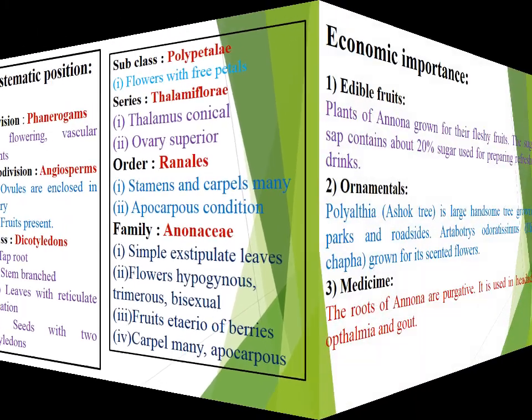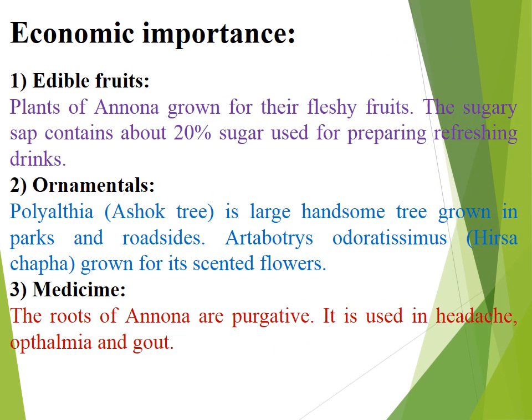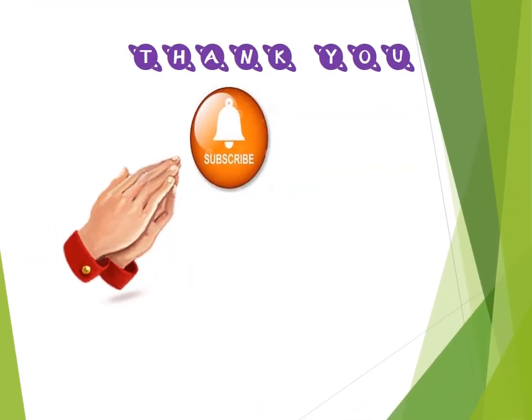Economic importance of family Annonaceae: Edible fruits — plants of Annona are grown for their fleshy fruits; the sugary pulp contains about 20% sugar, used for preparing refreshing drinks. Ornamentals — Polyalthia, Ashoka tree, is a large handsome tree grown in parks and roadsides. Artabotrys, also called Hirwa Chafa, is grown for its scented flowers. Medicine — the roots of Annona are purgative and used in headache and ophthalmia. Thank you for watching my video, please subscribe, like and share. See you in the next video.